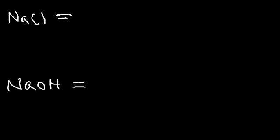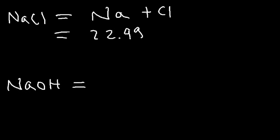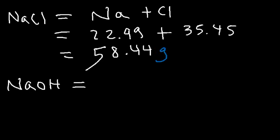So for NaCl, we simply need to add the atomic mass of sodium and chlorine. The atomic mass for sodium is 22.99. Sometimes you can round that to 23. And for chlorine, it's about 35.45. So if we add the two numbers, you should get 58.44 grams per mole. So one mole of sodium chloride has a mass of 58.44 grams.